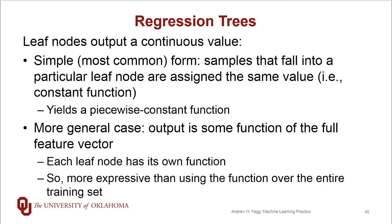In the more general case, we can actually put a function over the full feature vector in each of the leaf nodes, so each leaf node gets its own function that gets learned. This allows us to have a much more expressive type of function compared to the same form of function defined over the entire feature space, but it does give us a lot more complexity.